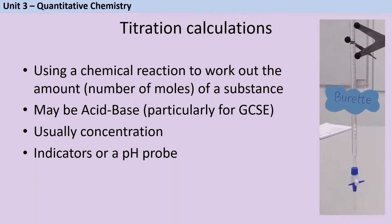Titration is an analytical method that uses a chemical reaction to help us work out the concentration of an unknown substance. This is done by performing a chemical reaction in which we already know the concentration of the second reactant. At GCSE we pretty much exclusively deal with acid-base titrations, but as you go on studying chemistry you'll also discover back titrations with solid substances and redox titrations which indicate themselves.